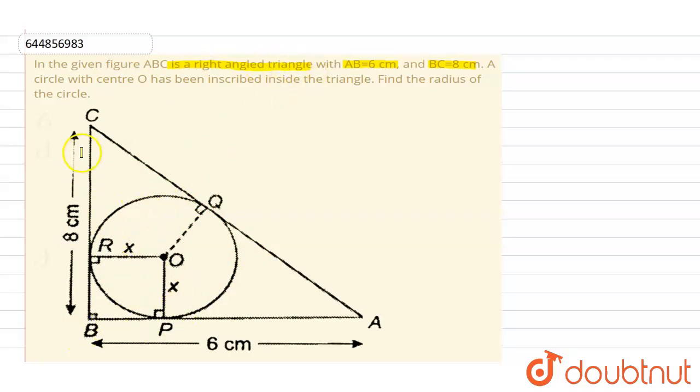From this we can say that the length of AC, using Pythagoras theorem, we can write that AC square will be equal to AB square plus BC square. From this we can say that AC square will be equal to 6 square plus 8 square. From this we can say AC square will be equal to 100. From this we can say AC equal to 10.